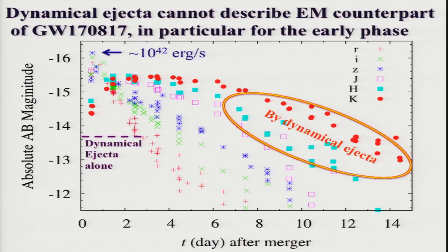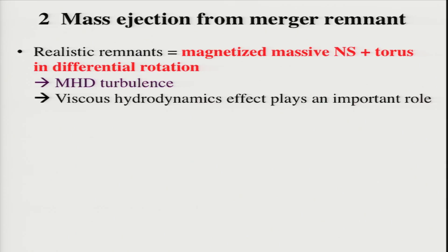Now we consider the viscous ejection. As I said, after the dynamical ejection and after the merger, we have a merger remnant, and from such a remnant, mass ejection could occur. The realistic remnant for this event is likely to be a massive neutron star surrounded by a torus. An important thing is that the neutron star is usually magnetized, so the merger remnant should be magnetized. Also, the merger remnant is in a highly dynamical state. In such a case, MHD turbulence could be induced, and viscosity could be effectively induced for such ejecta.